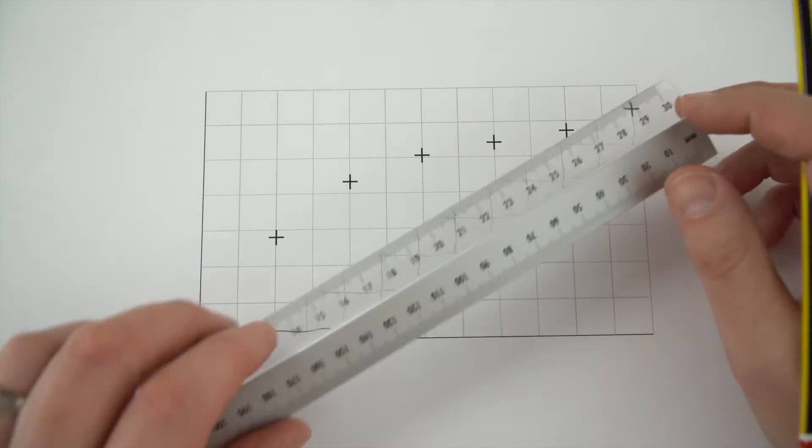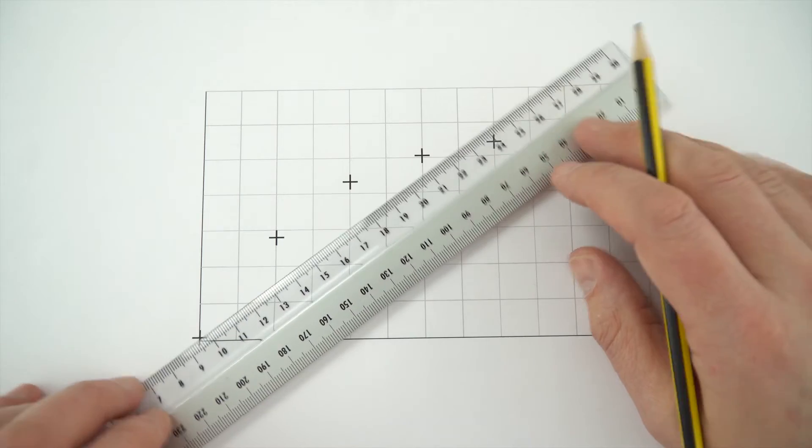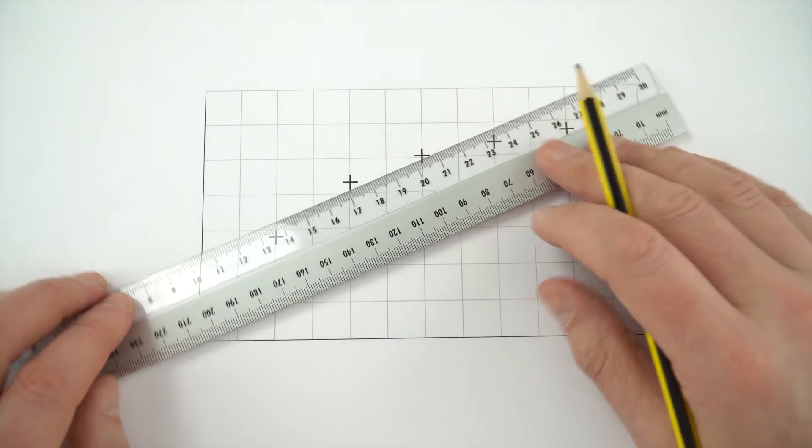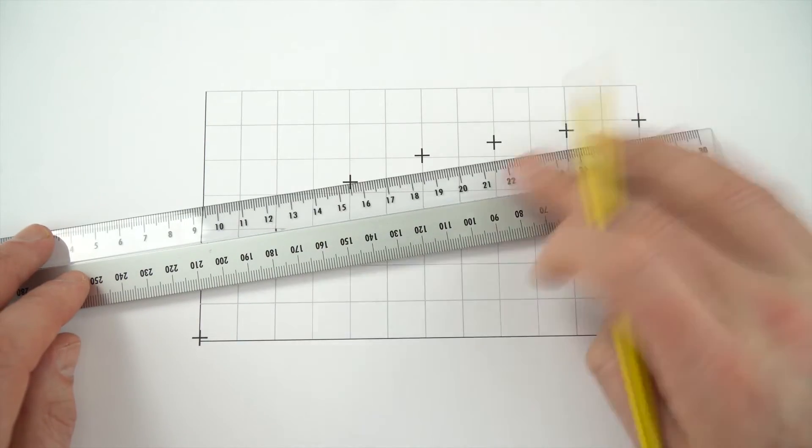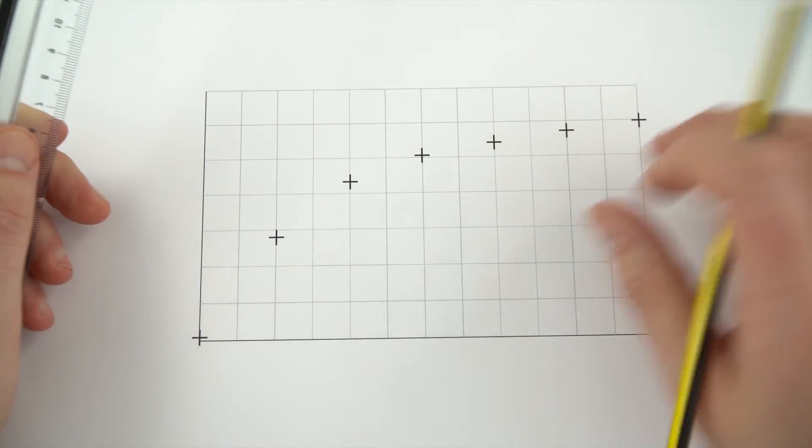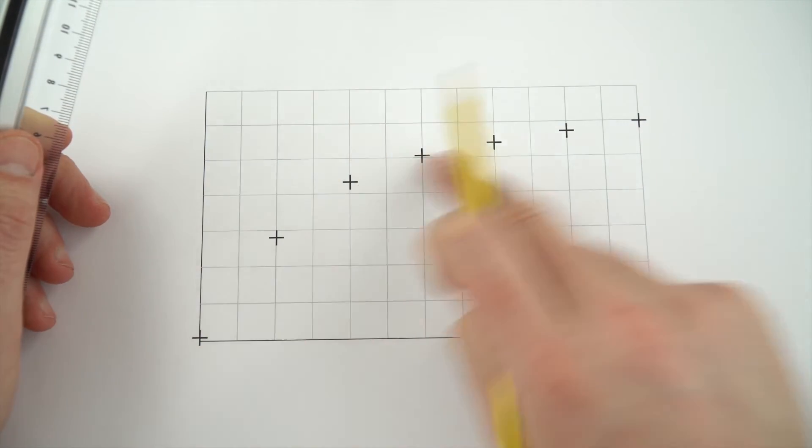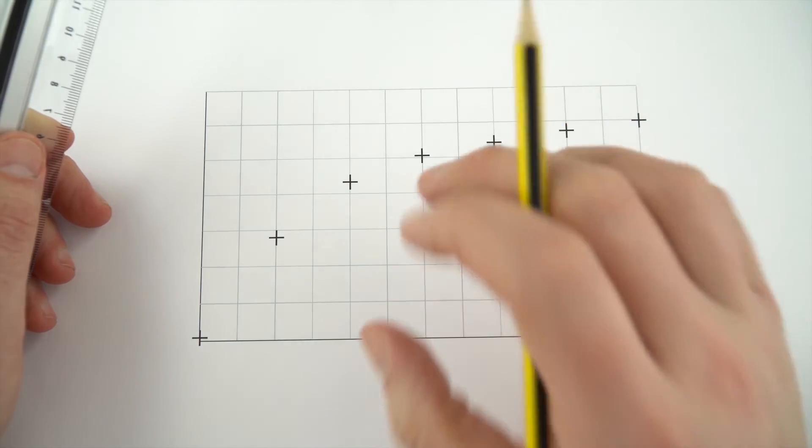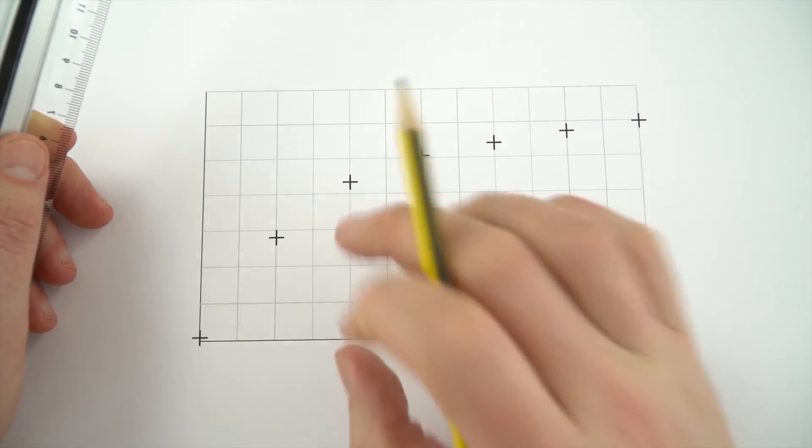So here we have a set of data, and you can see that if I try and put a line of best fit through it using the ruler, there's no way that I can really get a straight line to go through this data. So what we then have is maybe a curved line of best fit, which would be most appropriate. Now stuff like this, there are certain things that you shouldn't do.